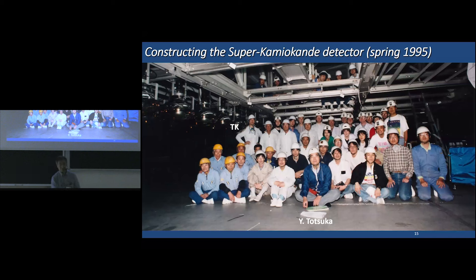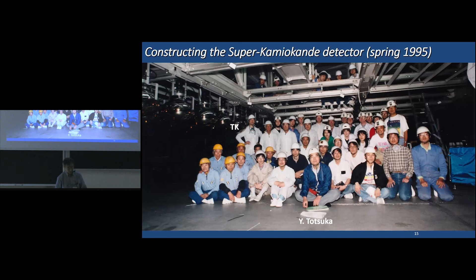Super-Kamiokande was approved by the Japanese government for construction in 1991. The construction period was five years. For the first four years, the main work was the excavation and the construction of the stainless steel tank. Then in the last year, physicists came to the Super-Kamiokande site and started working on the construction. This photo was taken in the spring of 1995 when we started the installation of the photomultiplier tubes onto the Super-Kamiokande tank.